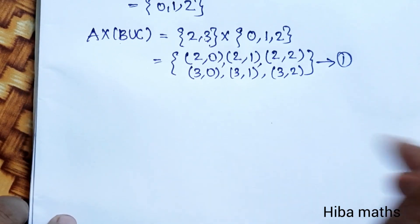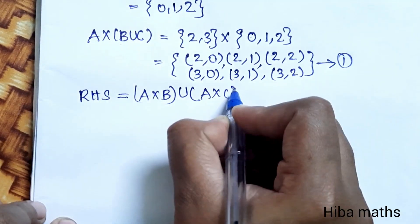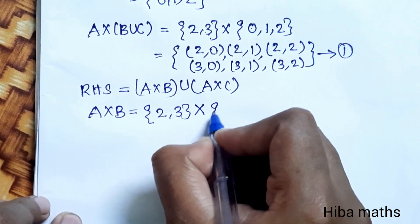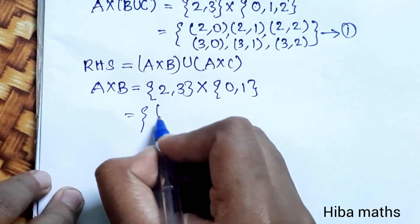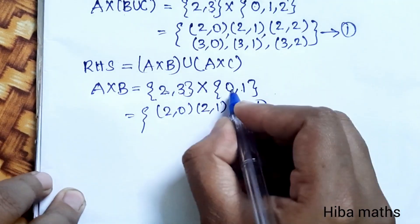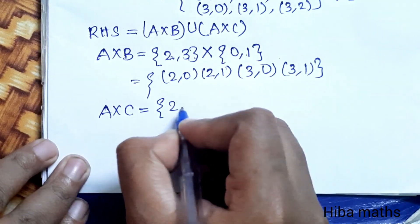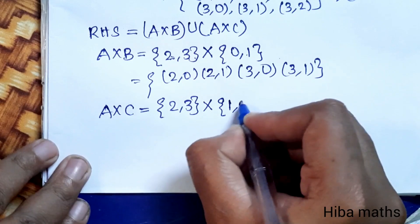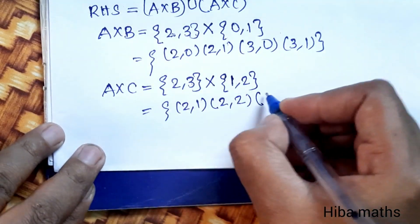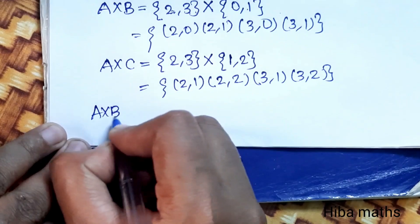This is the LHS result. Let's take RHS: A cross B union A cross C. First, A cross B: A value {2,3} cross B value {0,1} gives (2,0), (2,1), (3,0), (3,1). Now A cross C: A value {2,3} cross C value {1,2} gives (2,1), (2,2), (3,1), (3,2).